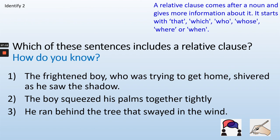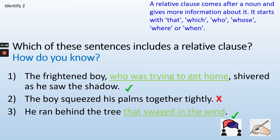Which of these sentences includes a relative clause? Write down one, two and three — tick if it has a relative clause, cross if it doesn't. Press pause while you work it out and press play when you're ready to check your answer. Did you spot the relative clause? Number one: 'The boy who was trying to get home' — 'who was trying to get home' is the relative clause about the boy, so that's a tick. Number two: 'The boy squeezed his palms together tightly' — there's no relative clause giving more information, so that's a cross. Number three: 'He ran behind the tree that swayed in the wind' — 'that swayed in the wind' tells us more about the tree, so number three is a tick. Press pause if you need to fix up your answer.